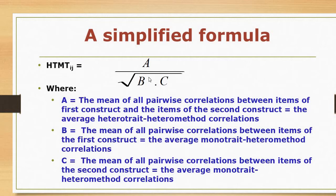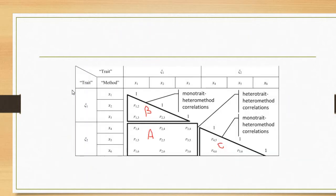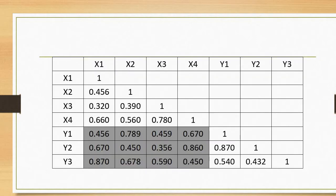We simply take the product of B and C, take the square root, then divide A by this value to get the value of HTMT. In more simple words, here is our matrix. In this matrix we have two constructs X and Y, where X has four items and Y has three items.